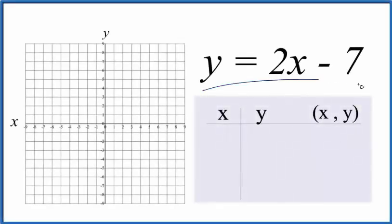If you're asked to graph the equation y equals 2x minus 7, here's how you do it. In this video, we'll use a table of values. We put a value in for x, do the math, and figure out y.